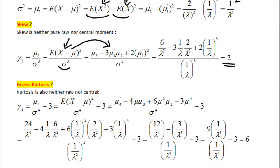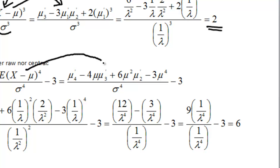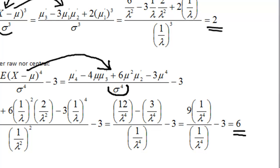And likewise for excess kurtosis, we can express the fourth central moments in terms of raw moments. I've done a video on that. We have to scale this numerator by sigma to the power of 4 and take away 3. It turns out that excess kurtosis of the exponential distribution is 6.